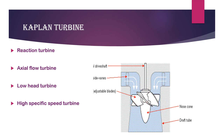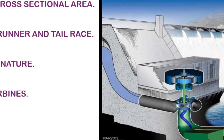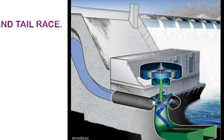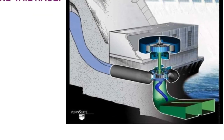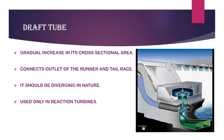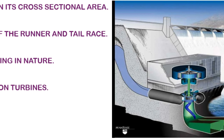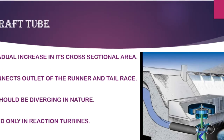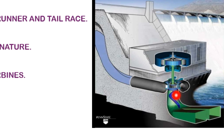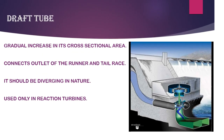Now let's look at the draft tube. In the penstock, water goes to the turbine — the runner rotates. After the runner, water exits through a draft tube, which has a gradually increasing (diverging) cross-sectional area. It connects the outlet of the runner to the tailrace. It should be diverging in nature and is used only in reaction turbines.